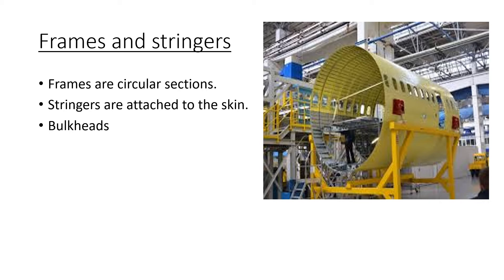Frames, stringers, and skin make up the fuselage. The skin can be stressed or normal depending on the structure type. There are two types: semi-monocoque and monocoque. Semi-monocoque uses stringers to prevent buckling along with skin and frames. In monocoque structure, the skin is stressed and carries most of the load; it uses frames but no stringers.